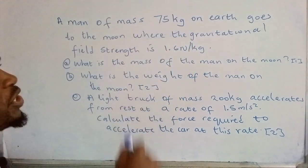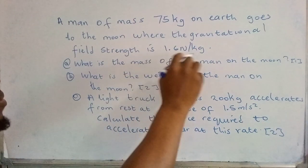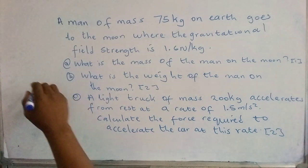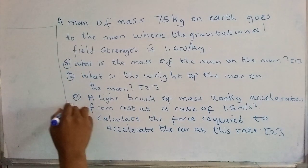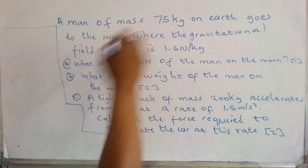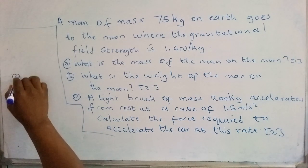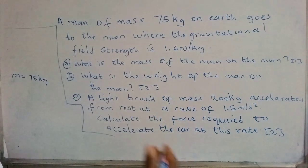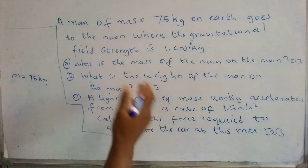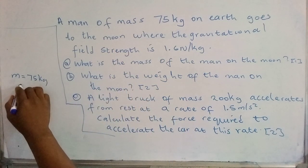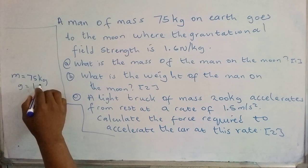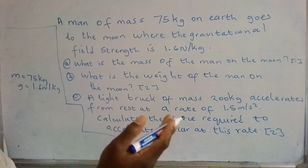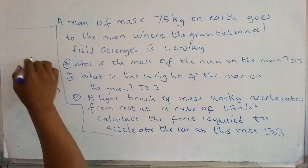A man of mass 75 kg on earth goes to the moon where the gravitational field strength is 1.6 N/kg. So now here, let me call it data for you. What we've been given is mass, so we're going to indicate that mass equals 75 kg. That's how much he weighs on earth. And he goes to the moon where the gravitational pull equals 1.6 N/kg. If you collect data when working out physics problems, they become much easier.